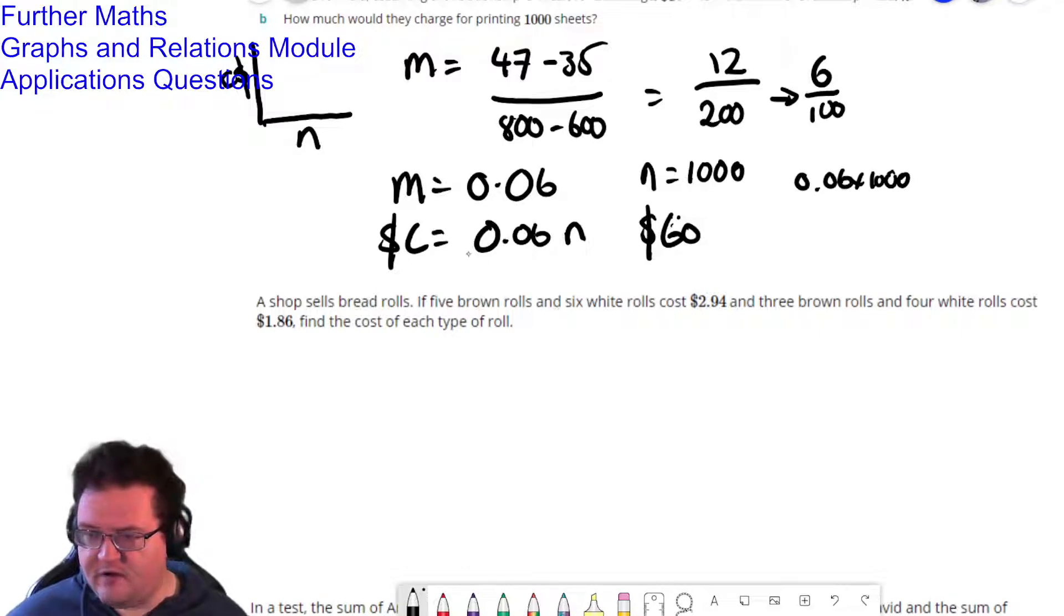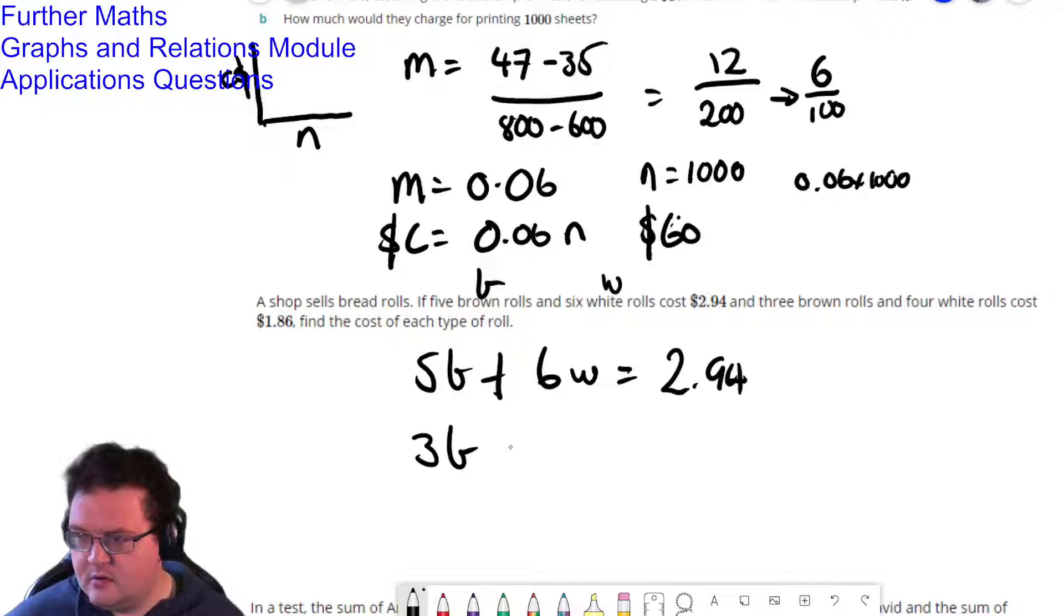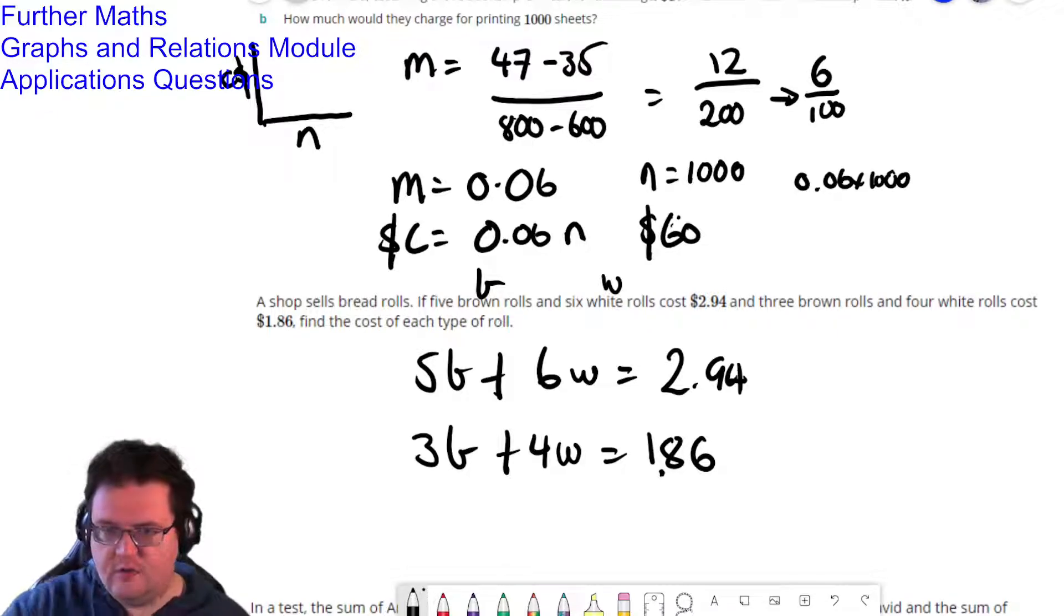So five brown rolls, so I'm going to use the letter b to represent my brown rolls, and the letter w to represent the white rolls. Five brown rolls and six white rolls. So that's five b plus six w, and I know that costs 2.94. And then the second equation is three brown rolls and four white rolls. So that's three brown, four white equals $1.86. Find the cost of each type of roll. So here's where we break out our CAS.